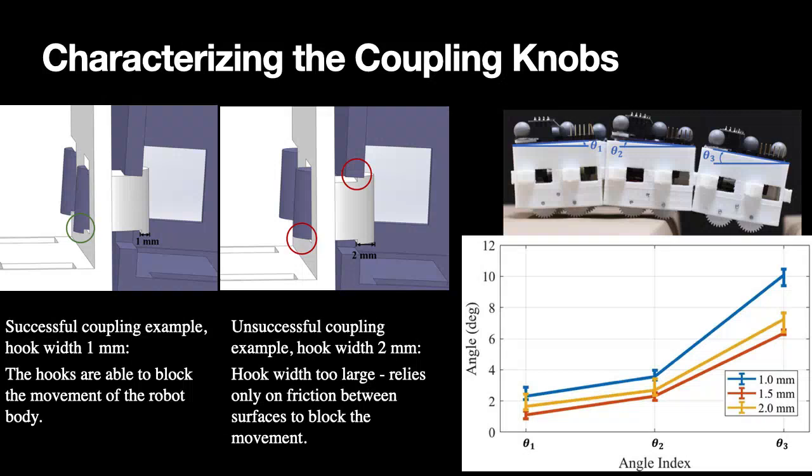However, if the hook is too wide, for example two millimeters in this case, when the robot tilts with gravity, it is not able to hold the robot in place. It only relies on the friction between the surfaces of the hook and the hole to hold the robot in place. However, this is not as strong as the one on the left.